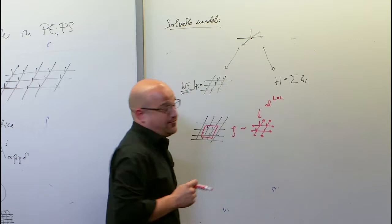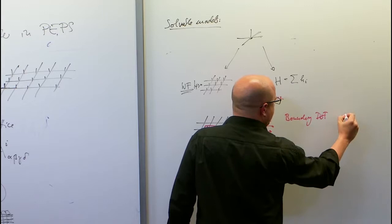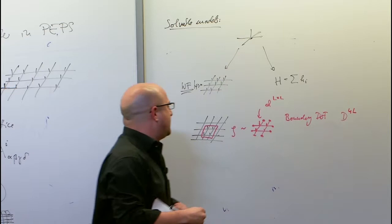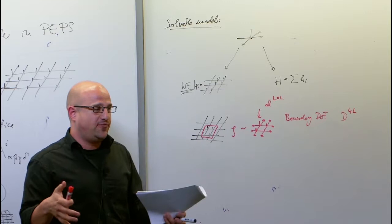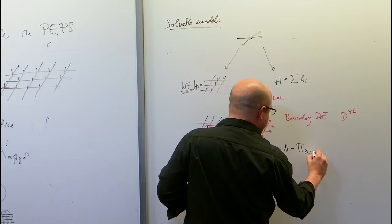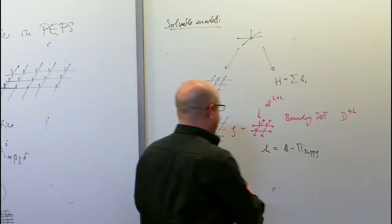If we choose our block l sufficiently large, this number will always exceed the boundary dimension, which means the reduced density operator does not occupy the full space. We can then write a local operator h = 1 minus the projector onto the support of rho. Any state cut out of such a tensor network will have energy zero, while other states will have positive energy. From this we build the parent Hamiltonian.